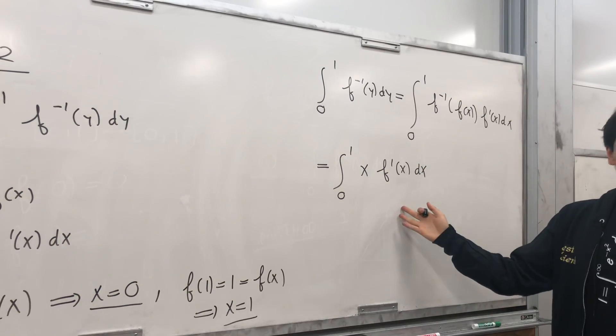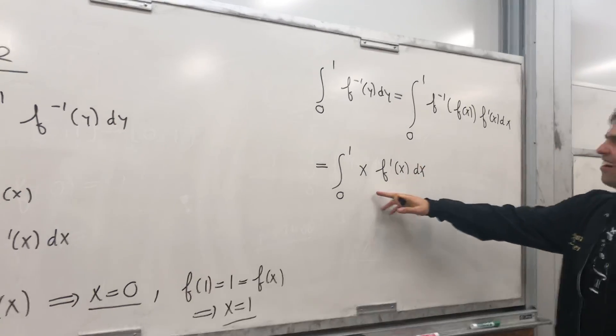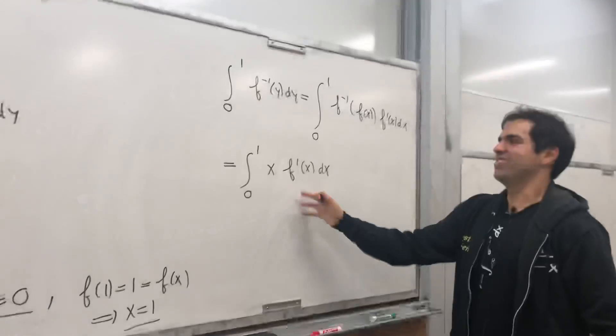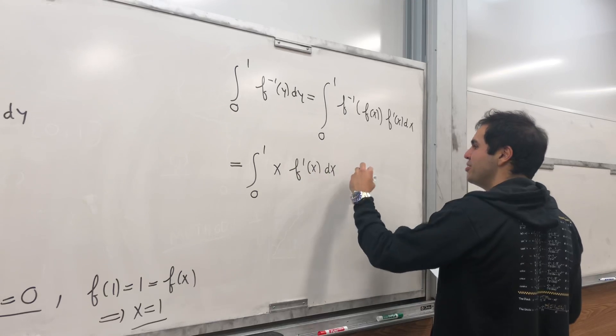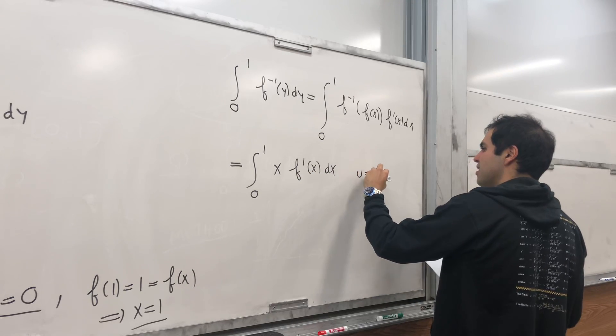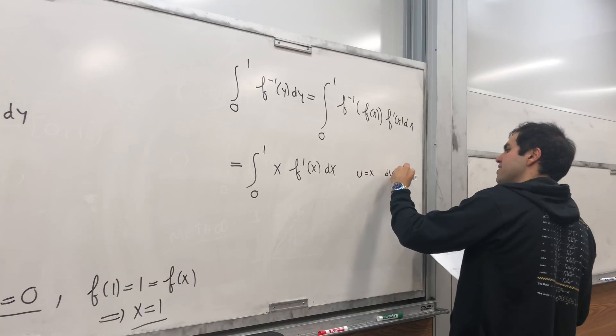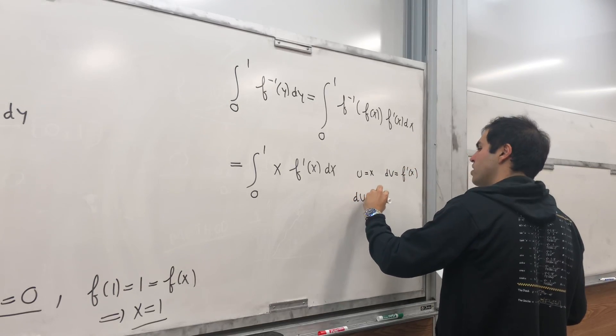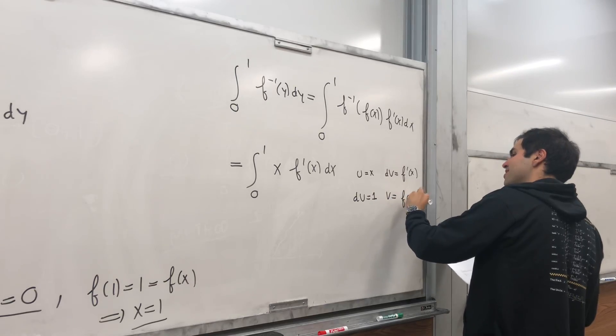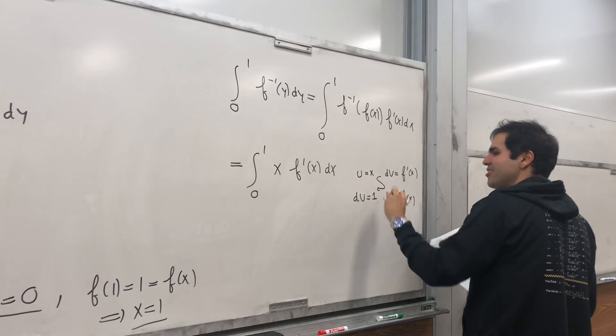And now, what do we use here? Well, we have a product and a derivative. So it's time to integrate by parts. And for this, we use u equals x, dv is f'(x), du is 1, and v is f(x). And you do the zigzag motion.